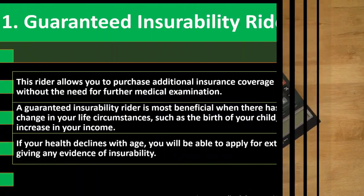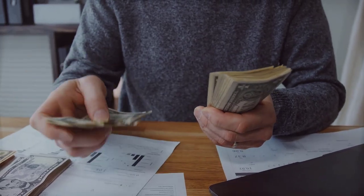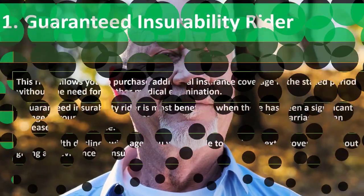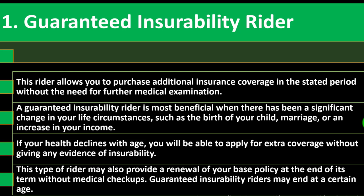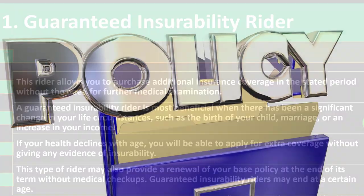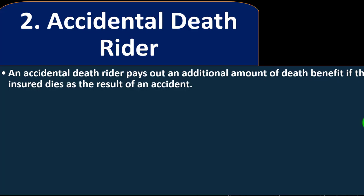You might want more insurance coverage if those life events occur, given that more people are dependent upon you or have become accustomed to higher income levels. If your health declines with age, you will be able to apply for extra coverage without providing evidence of insurability — so even if you've gotten sick, you may not have to go through a medical examination. This type of rider may also provide renewal of your base policy at the end of its term without medical checkups. Note that guaranteed insurability riders may end at a certain age.